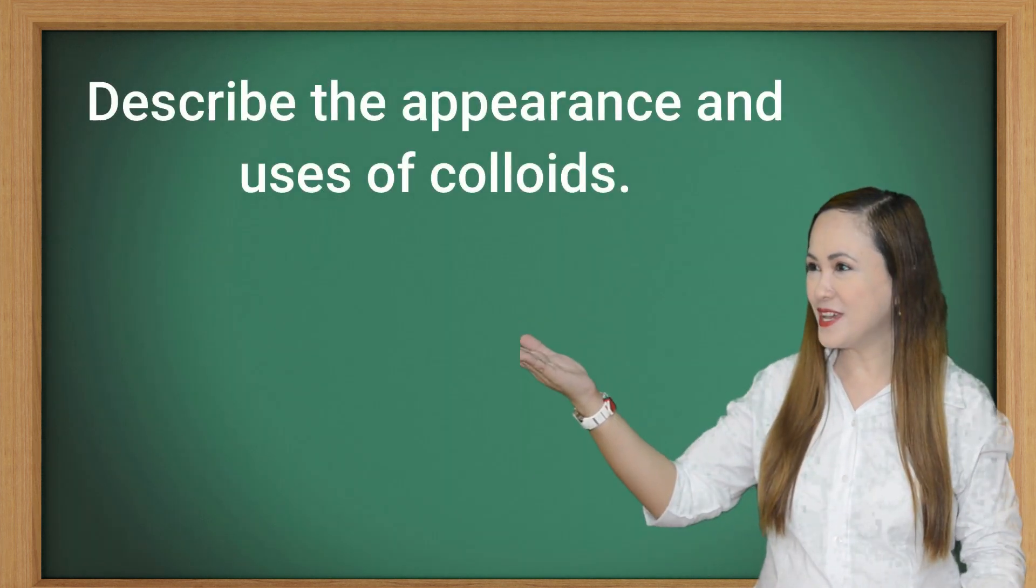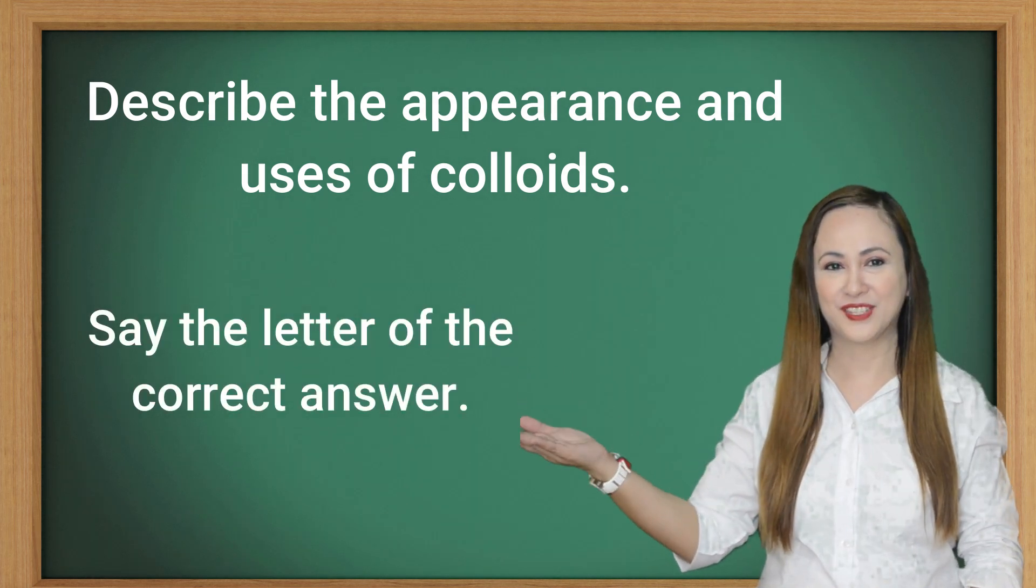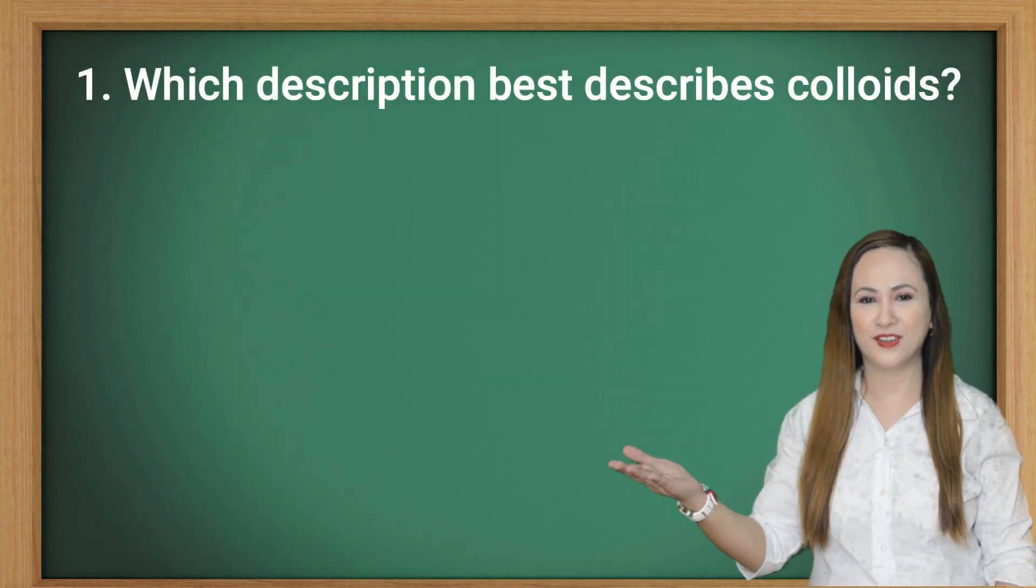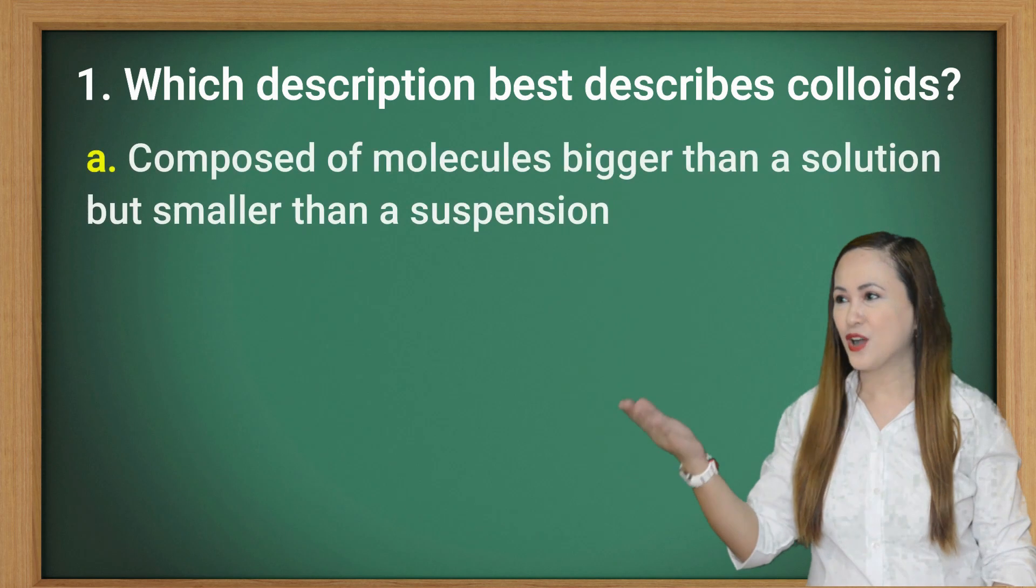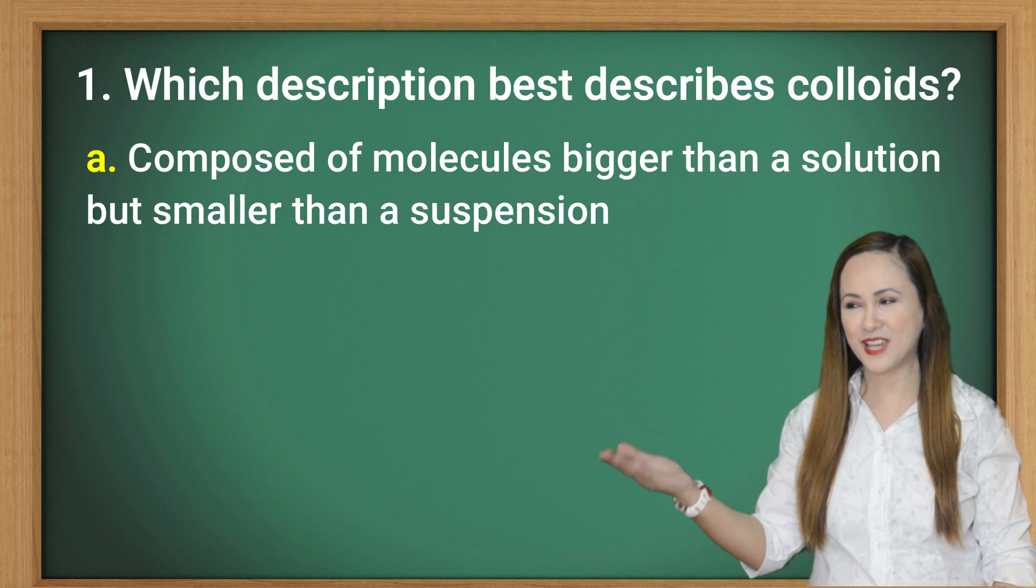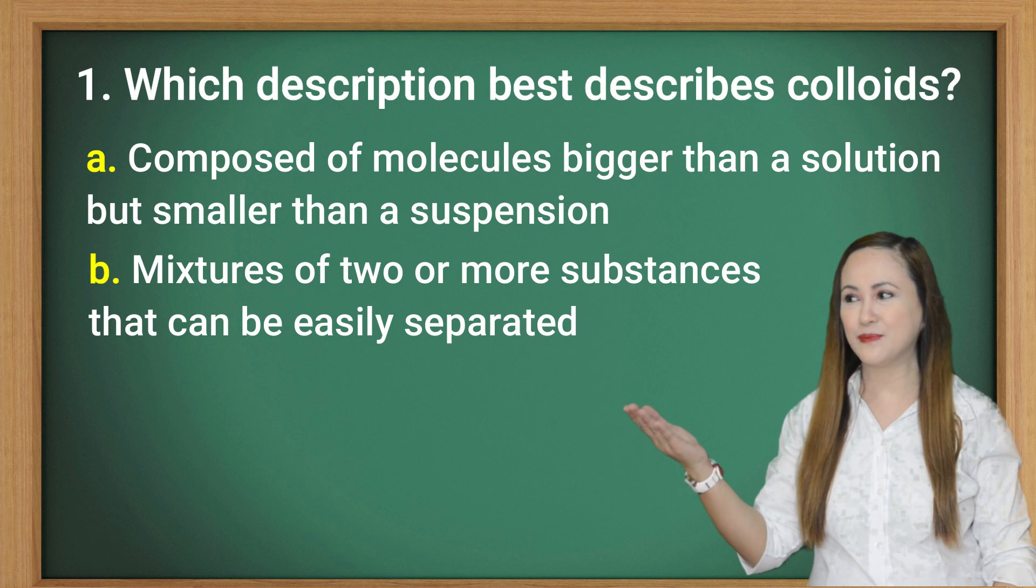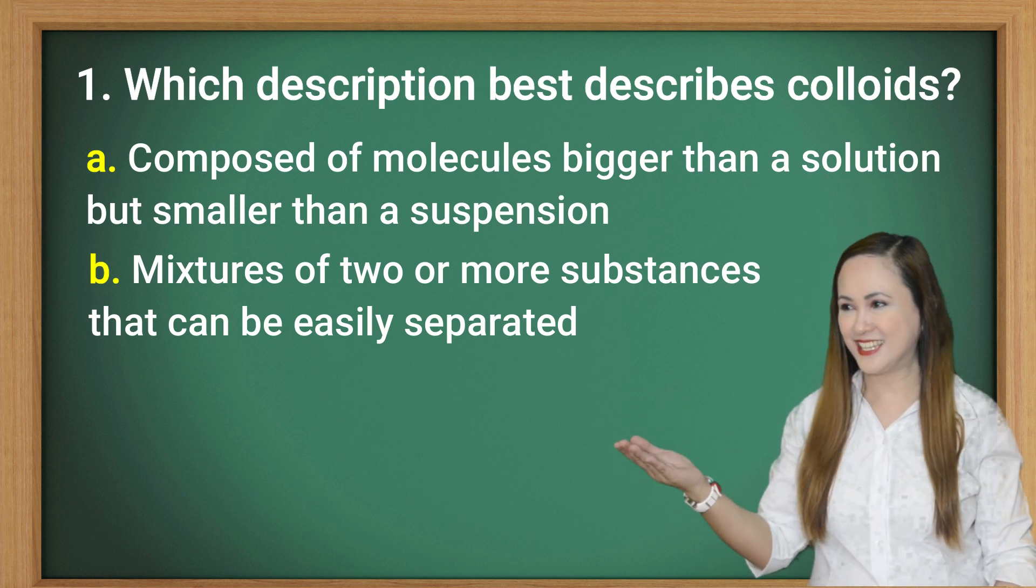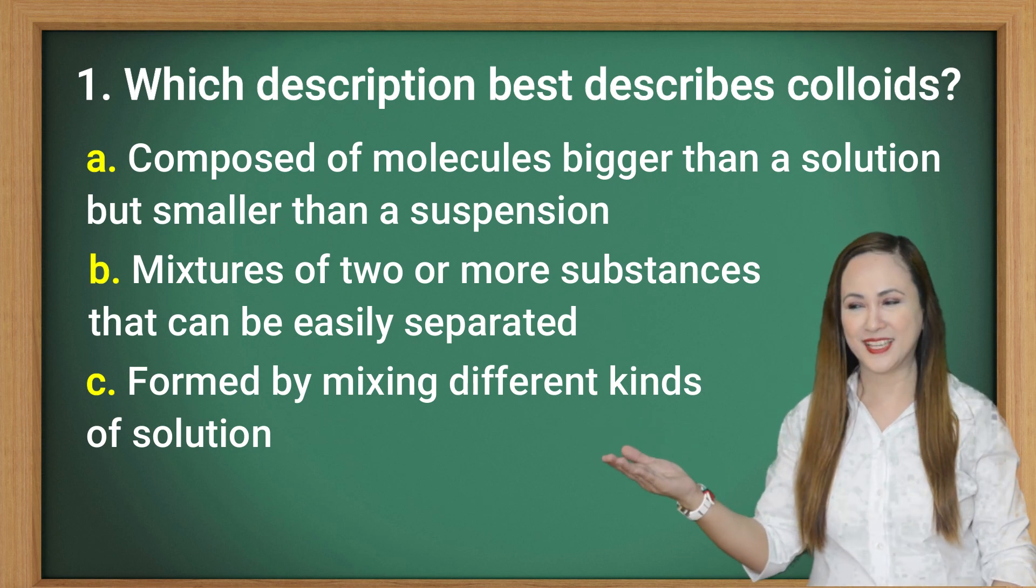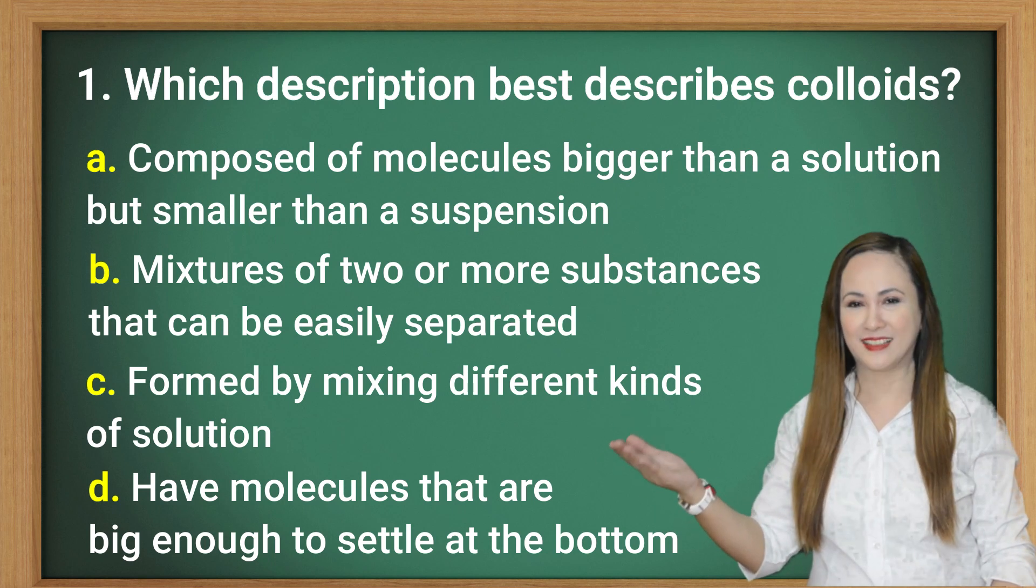Let's go to the other activity. Describe the appearance and uses of colloids. Say the letter of the correct answer. Number one, which description best describes colloids? Letter A, composed of molecules bigger than a solution but smaller than a suspension. Letter B, mixtures of two or more substances can be easily separated. Letter C, formed by mixing different kinds of solutions. Letter D, have molecules that are big enough to settle at the bottom.